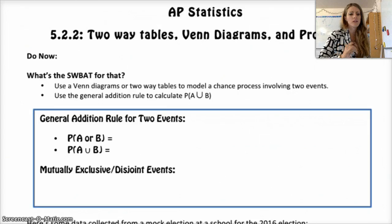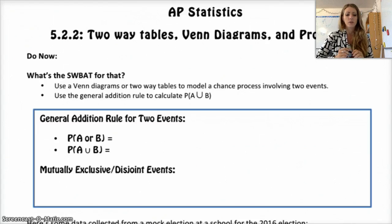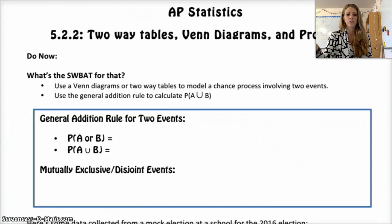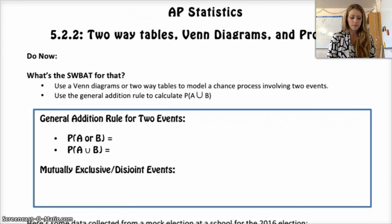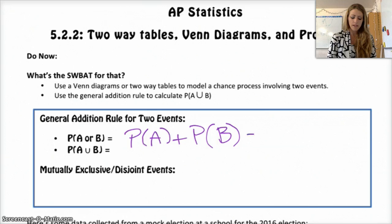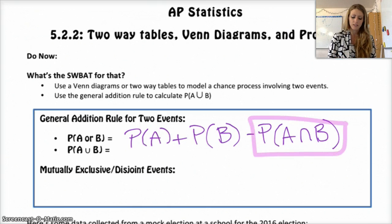Before, we had a general addition rule for two events in 5.2, but that was only for mutually exclusive events. There is a similar rule but for any two events — they don't have to be mutually exclusive. Basically, the probability of A or B is equal to the probability of A plus the probability of B minus the probability of A and B occurring at the same time. If they are mutually exclusive, this last piece equals zero.